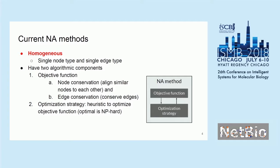Not necessarily all network alignment methods strictly follow these, but it's a useful way to think about the network alignment problem. There's an objective function — we're still going to look at topological similarity in this study. That's node conservation, which aligns nodes to each other, and another measure called edge conservation, where we want to conserve edges. The second part is the optimization strategy, just a heuristic to optimize these objective functions. These two components together generally make up the network alignment problem.